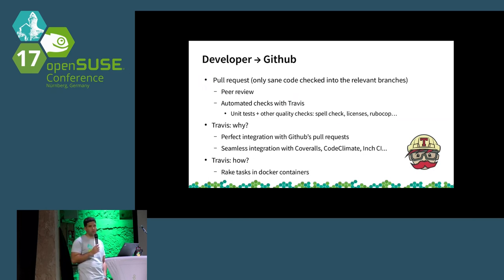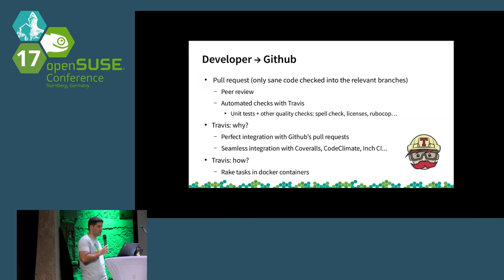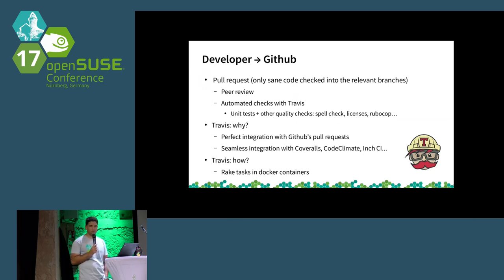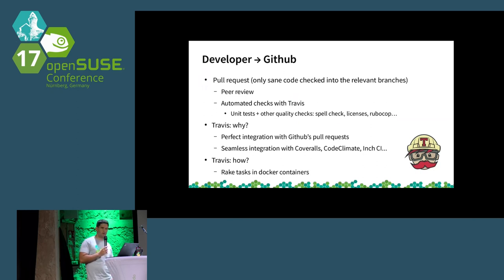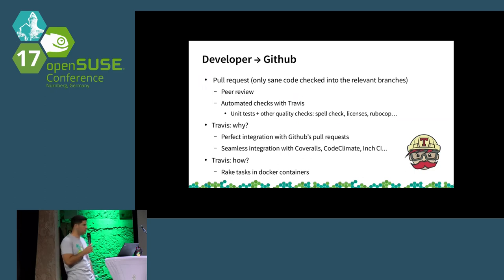For example, we use Coveralls, with which we measure which parts of our source code are covered by unit tests — more important is knowing which parts are not, so we know we need to write tests for those. We use CodeClimate, a service that spots parts of your source code that look suspicious or more complex than they should be, so maybe you can refactor and improve them. Some of our repositories also use Inch, which measures the coverage of documentation so we know which parts of our source code are really documented.